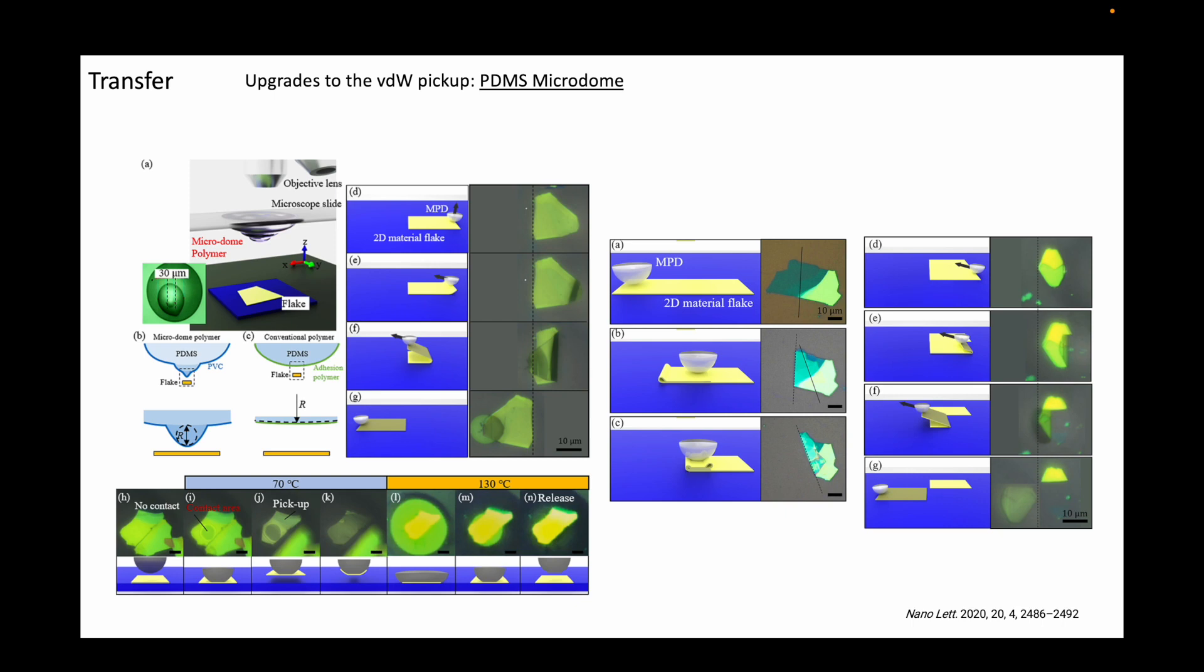As you can see in these images, they are able to flip, fold, and rip the flakes. They also showed in the paper that they can drag one flake across another to iron out the bubbles. The amount of control over the 2D flakes the author showed in this work is quite impressive and unprecedented.